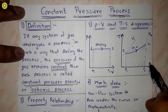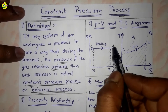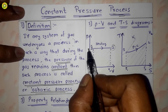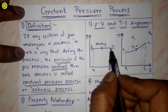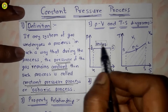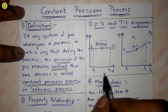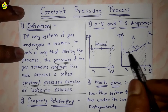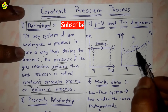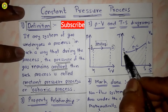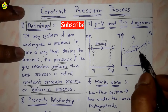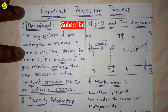As you can see in the PV and TS diagrams, on the PV diagram this is state 1 and state 2, where pressure remains constant — shown as a straight horizontal line from state 1 to state 2. This is a heating process where volume changes from V1 to V2. On the TS diagram, this curve represents the heating process from state 1 to state 2, where temperature increases from T1 to T2 at constant pressure.